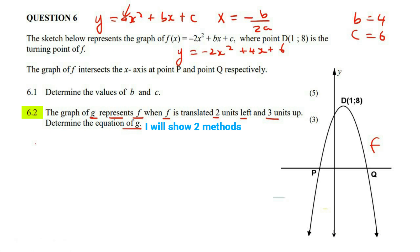I've showed you two ways of writing the equation of f. Now there's this way. But then there was also the turning point method. This is graph f, which was negative two, and then we had x minus one, and then we said plus eight.